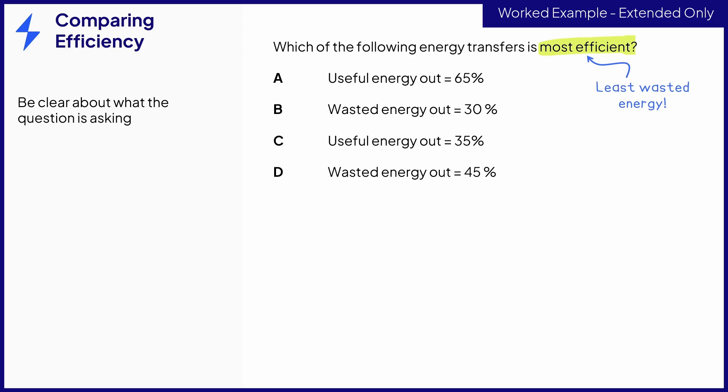Because we have two different values to compare, we need to focus on just one of them. So let's figure out the percentage of wasted energy for all the answer options. If 100% is the total amount of energy being transferred out of the system, and for A, 65% of that is useful, then the remaining 35% is wasted. And for C, 35% is useful, so that leaves 65% wasted.